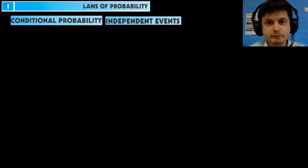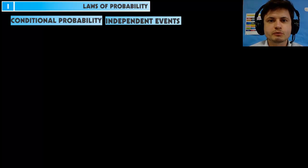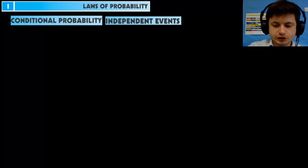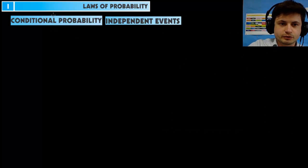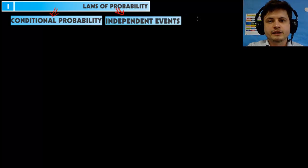Hello YouTube and welcome back to What The Math. Today we're doing chapter 9 and finishing probability. This time we're talking about laws of probability, specifically conditional probability and independent events. These are probably the more challenging topics because they involve some formulas.